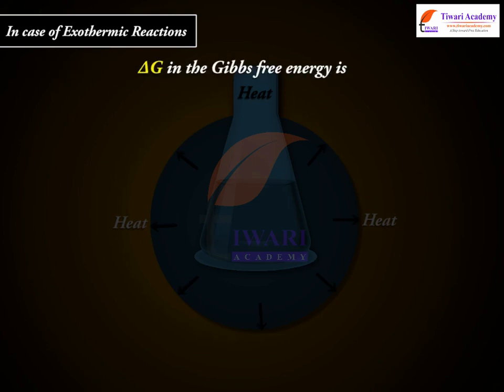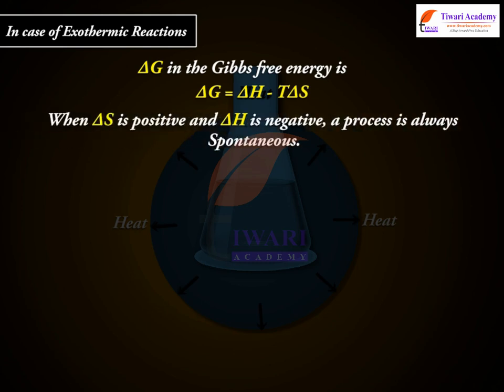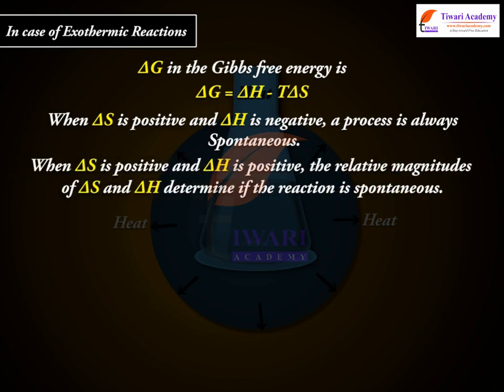The Gibbs free energy equation is ΔG = ΔH − TΔS. When ΔS is positive and ΔH is negative, a process is always spontaneous. When ΔS is positive and ΔH is positive, the relative magnitudes of ΔS and ΔH determine if the reaction is spontaneous.